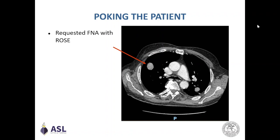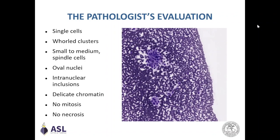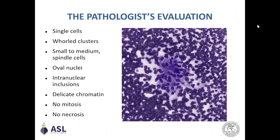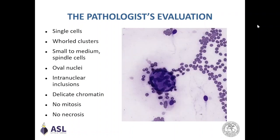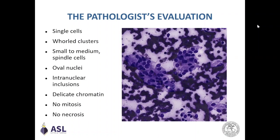During the rapid on-site evaluation, the pathologist performed a smear of part of the material. The smear was stained with a quick stain. The remaining material was formally fixed. At the microscope, the smear was composed of spindle cells arranged individually, in clumps, or in cohesive groups. These cells had bland cytology with monomorphous oval nuclei, delicate chromatin, and intranuclear cellular inclusions. No necrosis was seen.